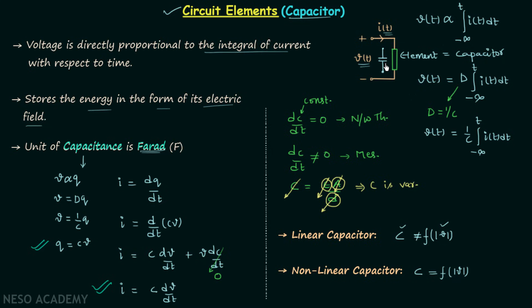We will get the idea that voltage across this element is proportional to the time rate of change of current through the element. So this is all for this lecture. I will end it here — see you in the next one.